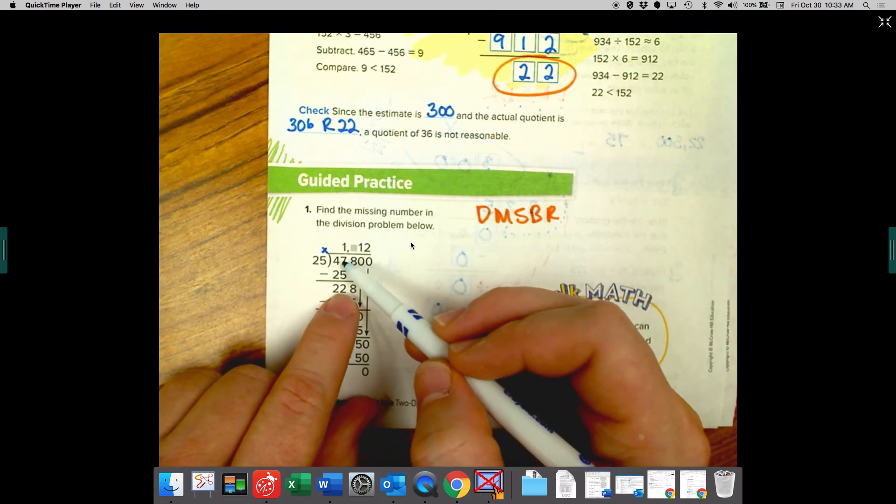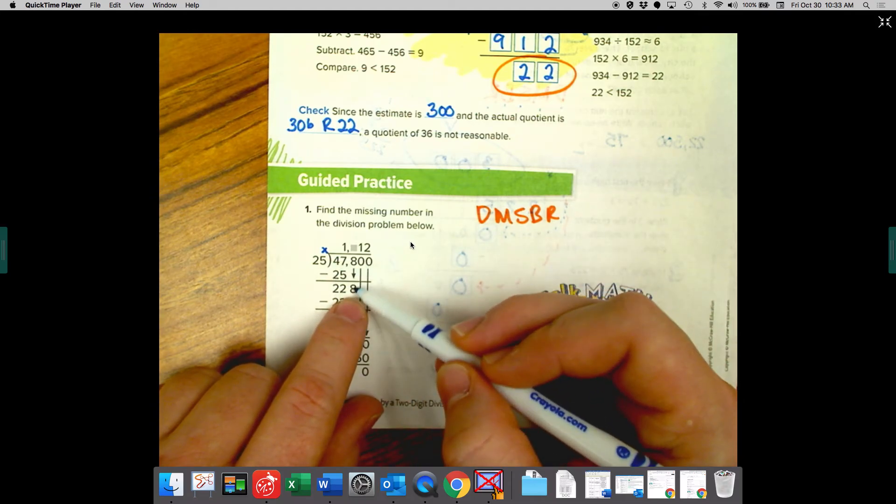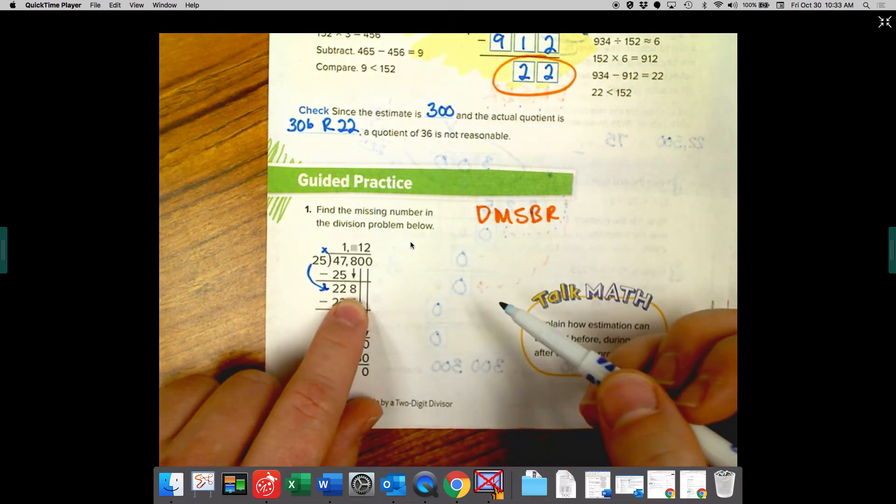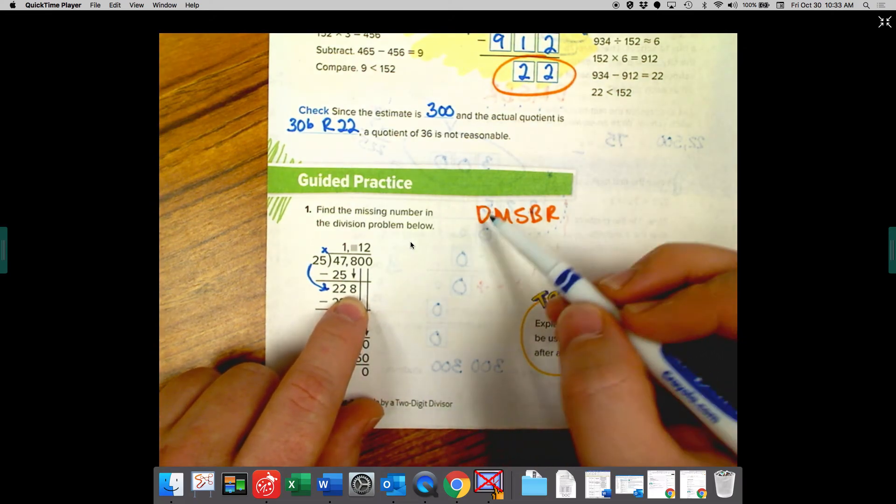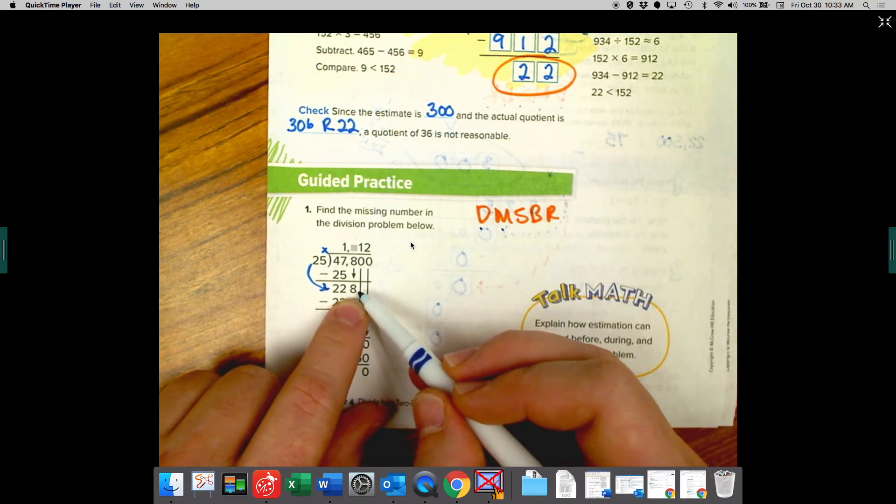Then they subtracted. So seven minus five is two. That looks good. Four minus two is two. They brought down the eight. Now they asked 25 goes into 225. So we're on the divide step. We're going to multiply to see if we can get close to this number.